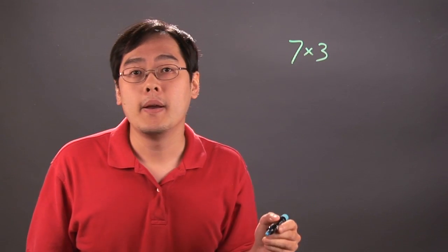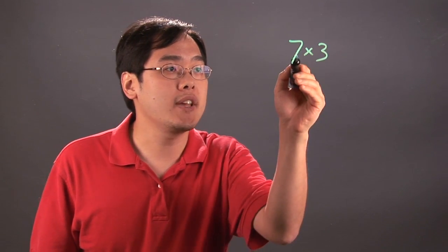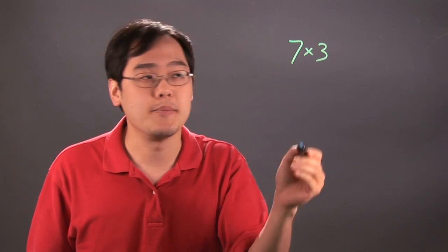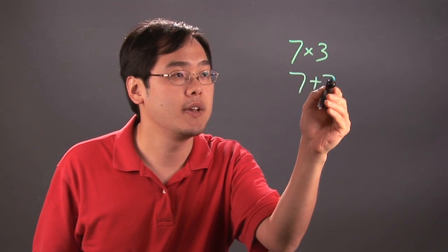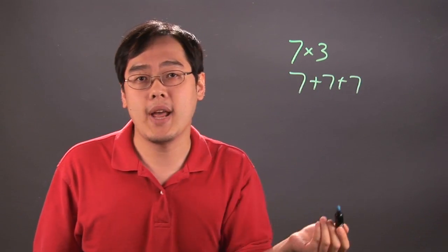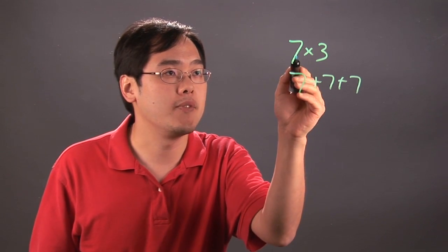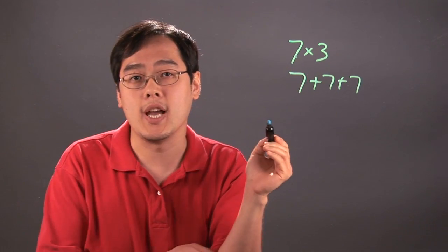For example, if you have 7 times 3, what this tells you is you're taking the number 7 and adding it 3 times. For example, 7 plus 7 plus 7. That's what 7 times 3 actually is. You're taking the number 7 and adding it by itself 3 times.